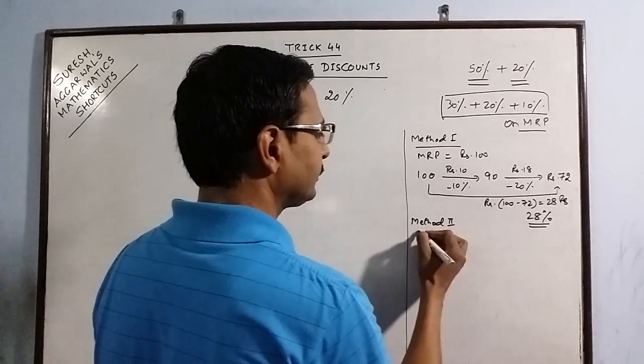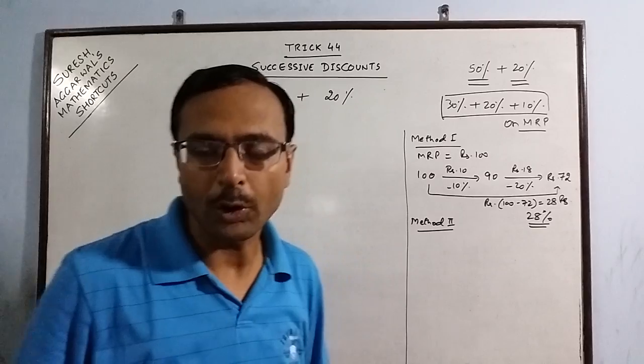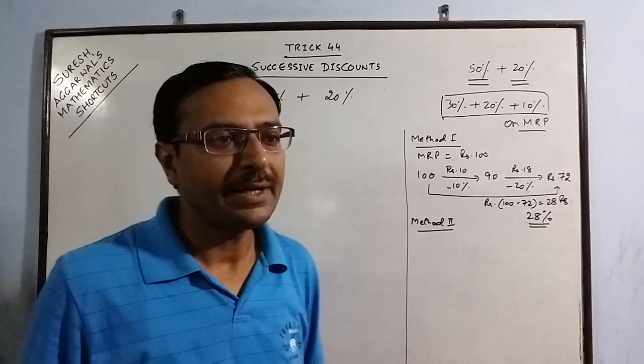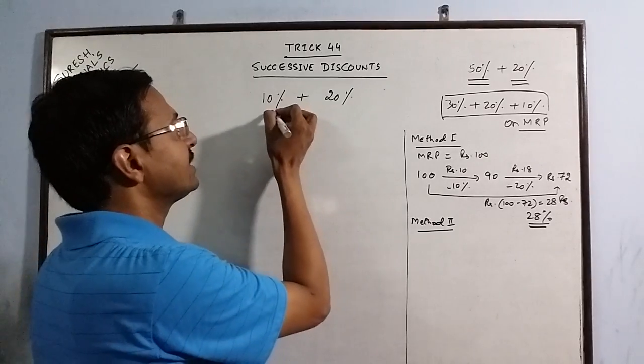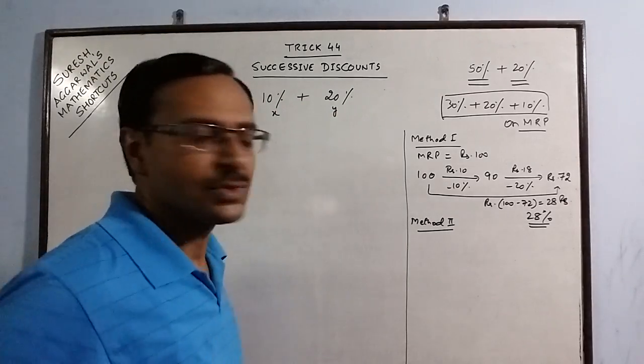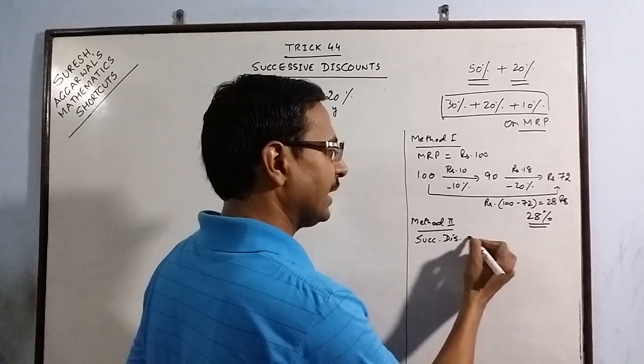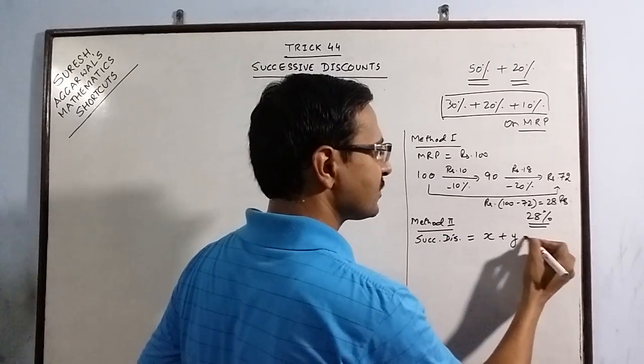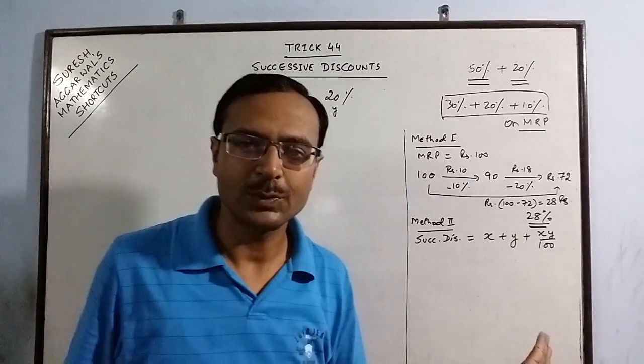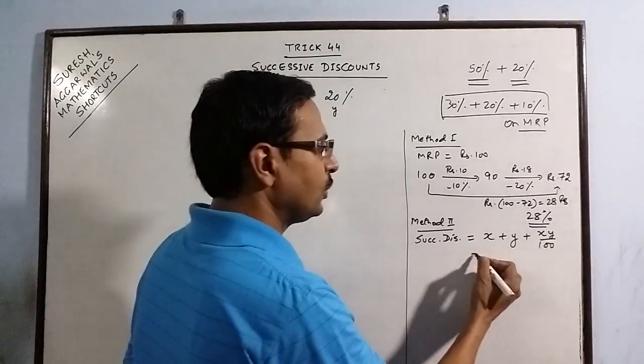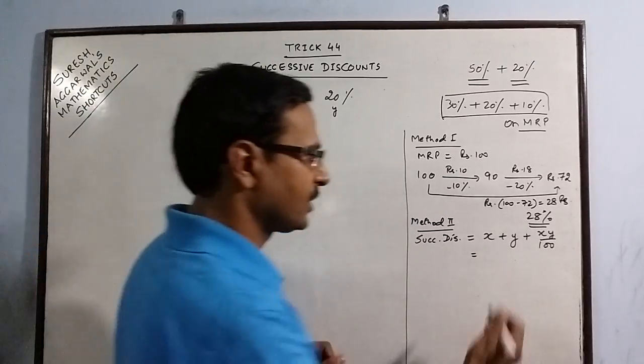In the second method, in most of the books, this formula is given for calculating the successive discount directly. If you consider this as x and this as y, so successive discount is calculated by using the formula x plus y plus xy upon 100. This is one of the direct methods which is given in books. You have to consider the discount as negative because it is always subtracted.